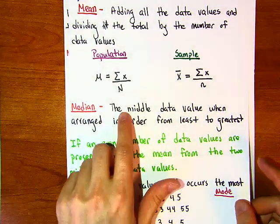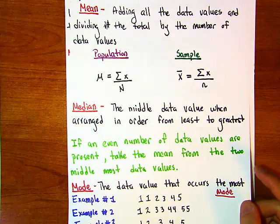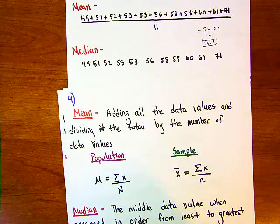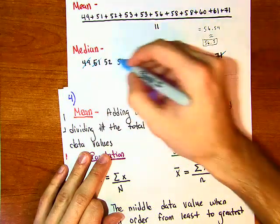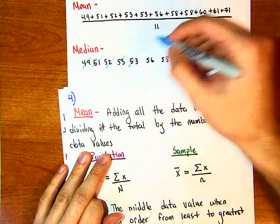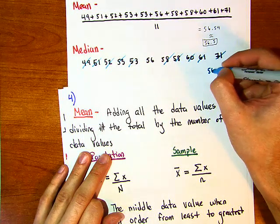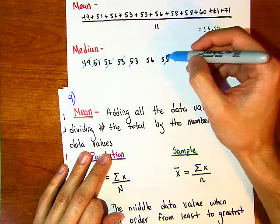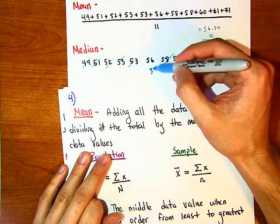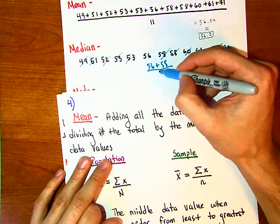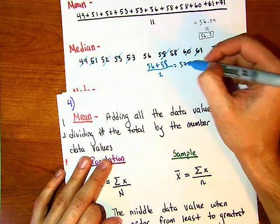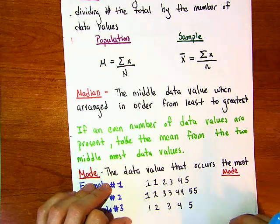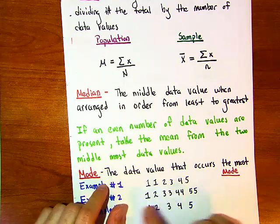The median is the middle data value when arranged in order from least to greatest. If you have an odd number of data values, you just scratch them out from both ends until you get to the middle-most value, which is 56. If you had an even number of data values, you'd take the two middle-most values — say 56 and 58 — add them and divide by two to get 57.